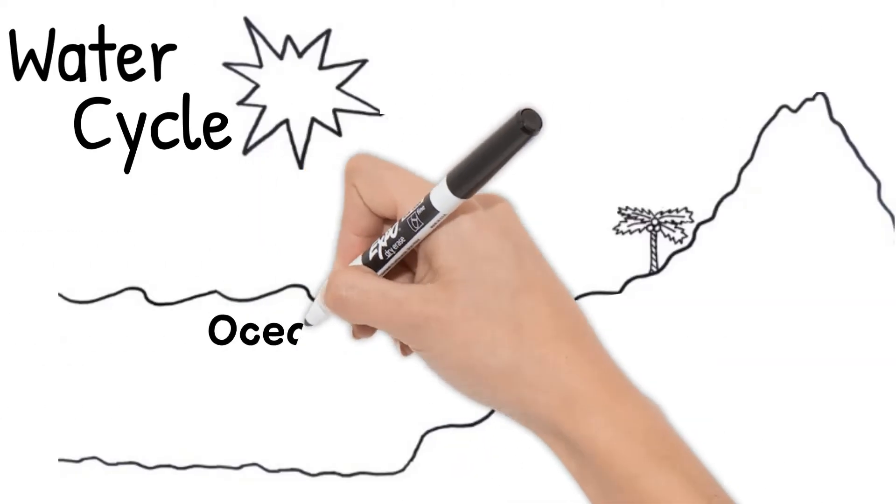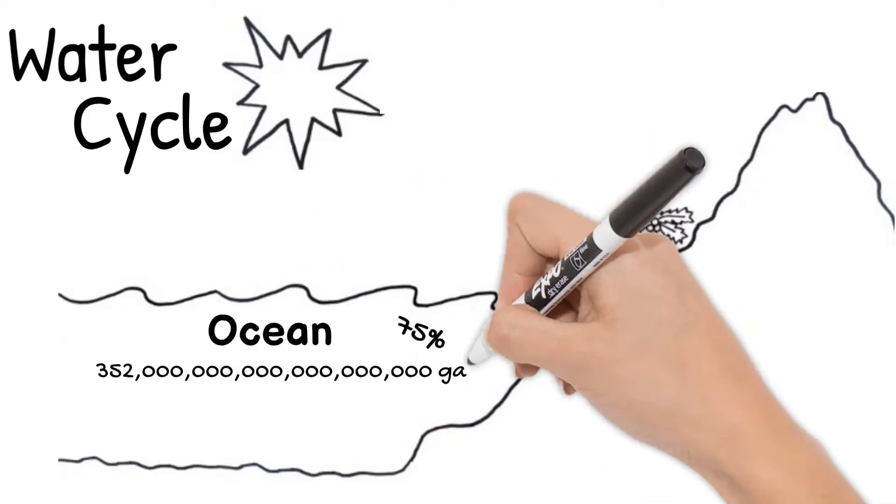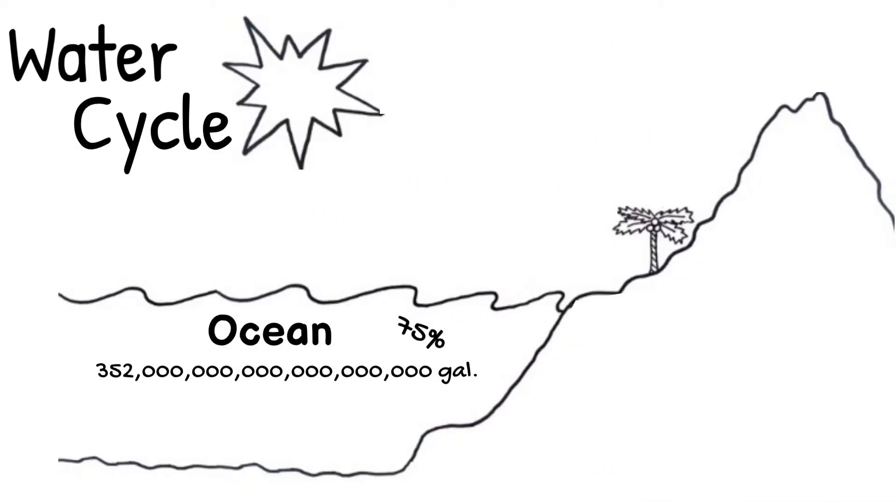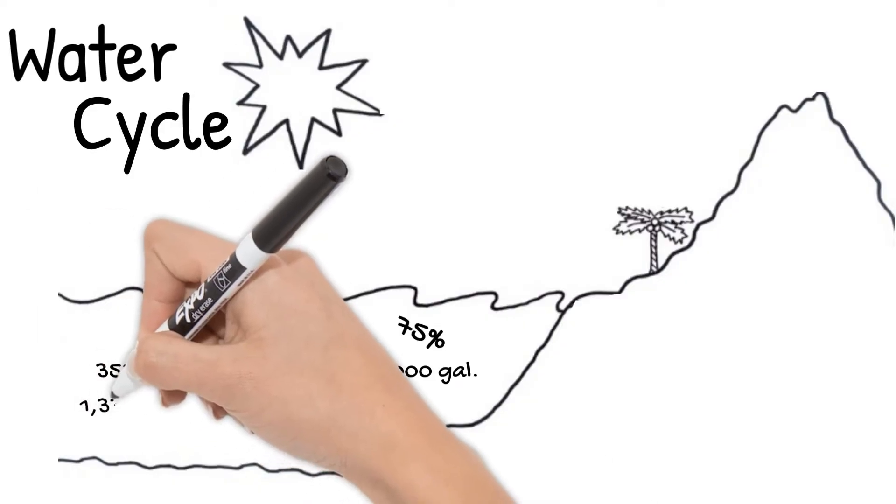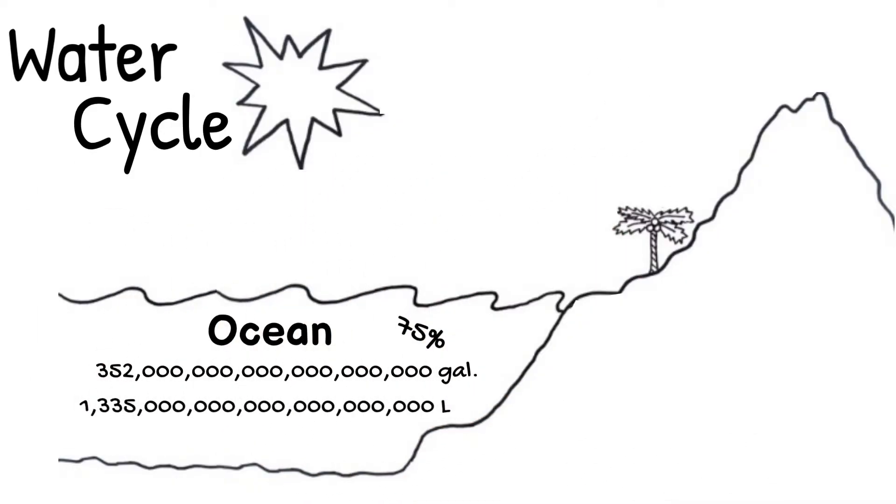The ocean makes up 75% of the earth's surface, and it is estimated to hold 352 quintillion gallons of water. That's equal to 1 sextillion 335 quintillion liters. That is a lot of water.